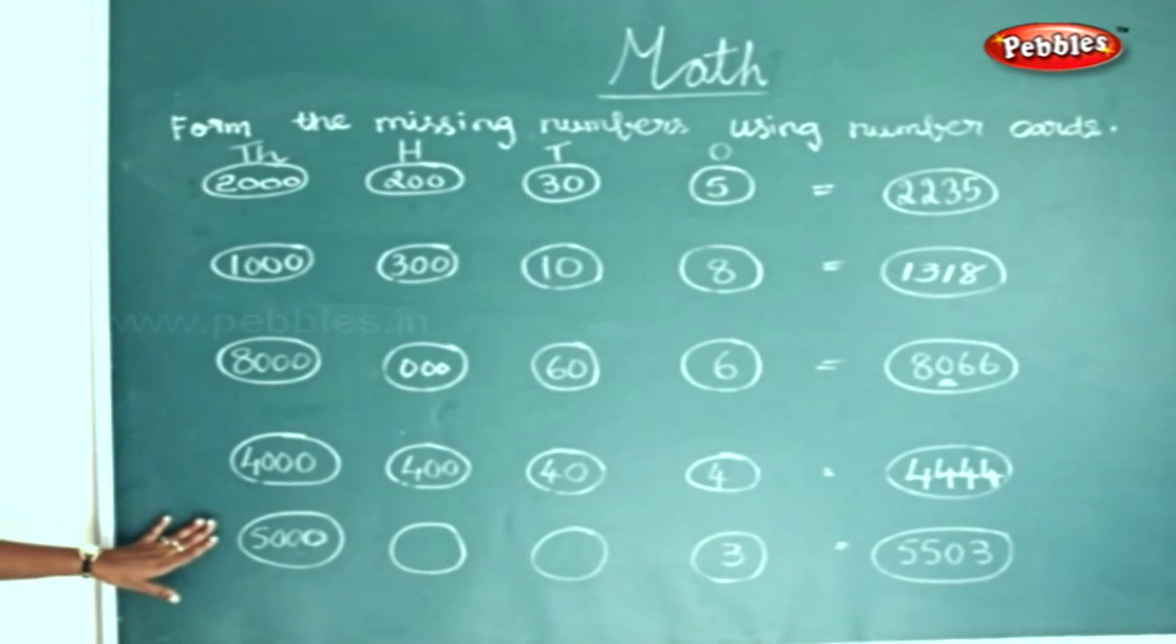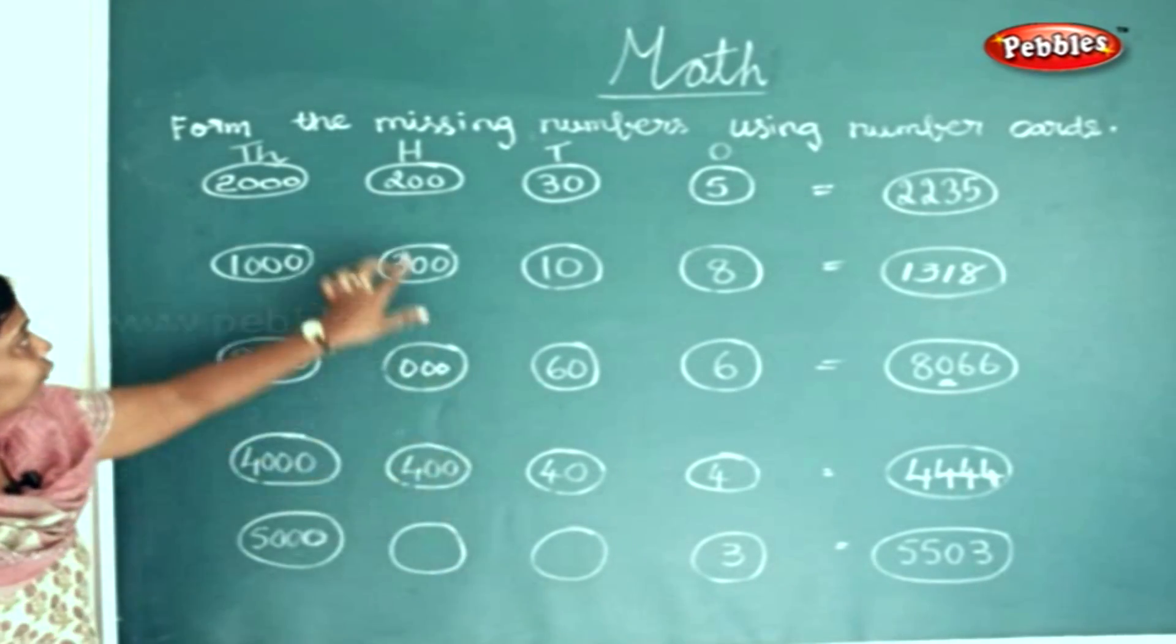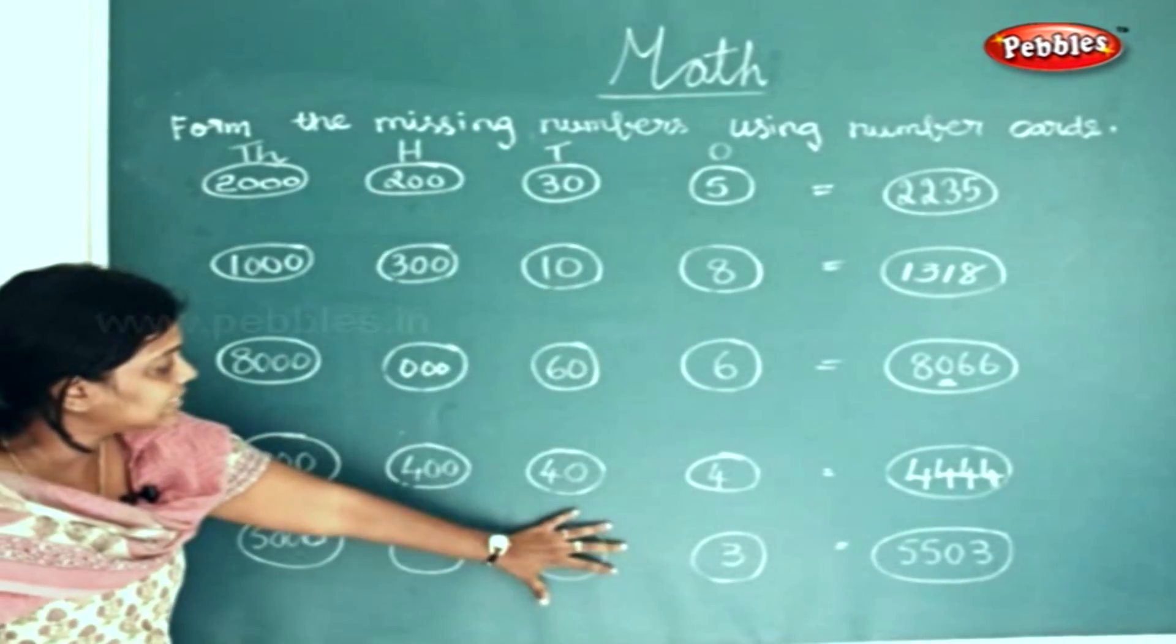The next sum: you have 5000 in the thousands place. The hundreds place is left off for you, and the tens place is left off for you.